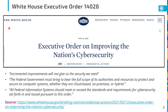A few key quotes from that executive order: 'Incremental improvements will not give us the security we need. The federal government must bring to bear the full scope of its authorities and resources to protect and secure its computer systems. All federal information systems should meet or exceed the standards and requirements for cybersecurity set forth in this order.' There's debate at different institutions about what constitutes a federal information system, but we're feeling the impacts of this executive order at my organization.